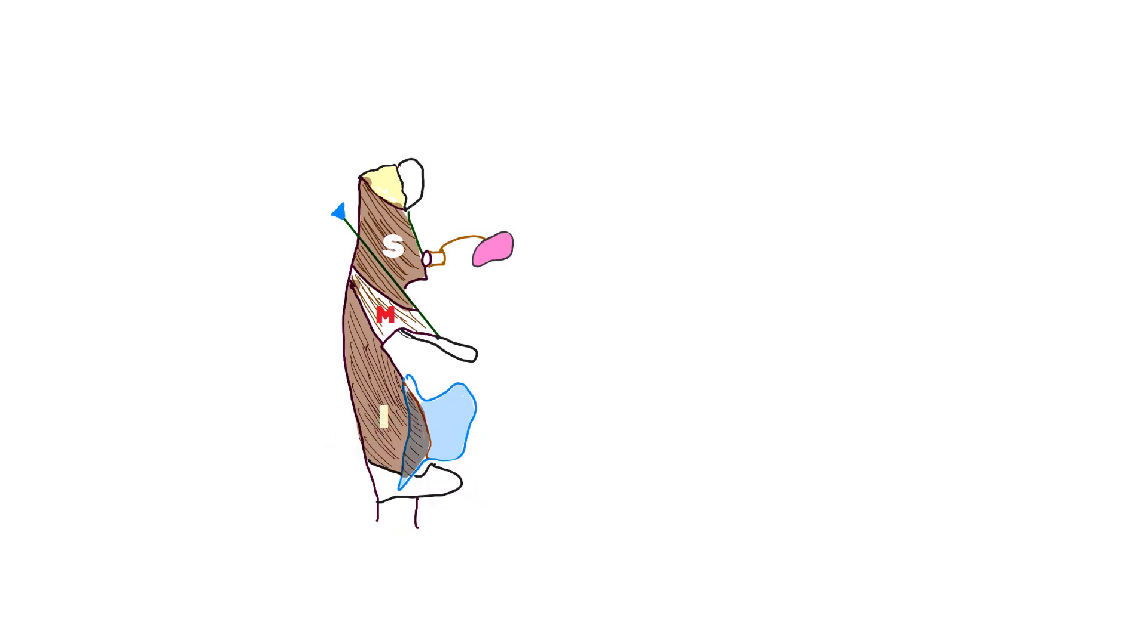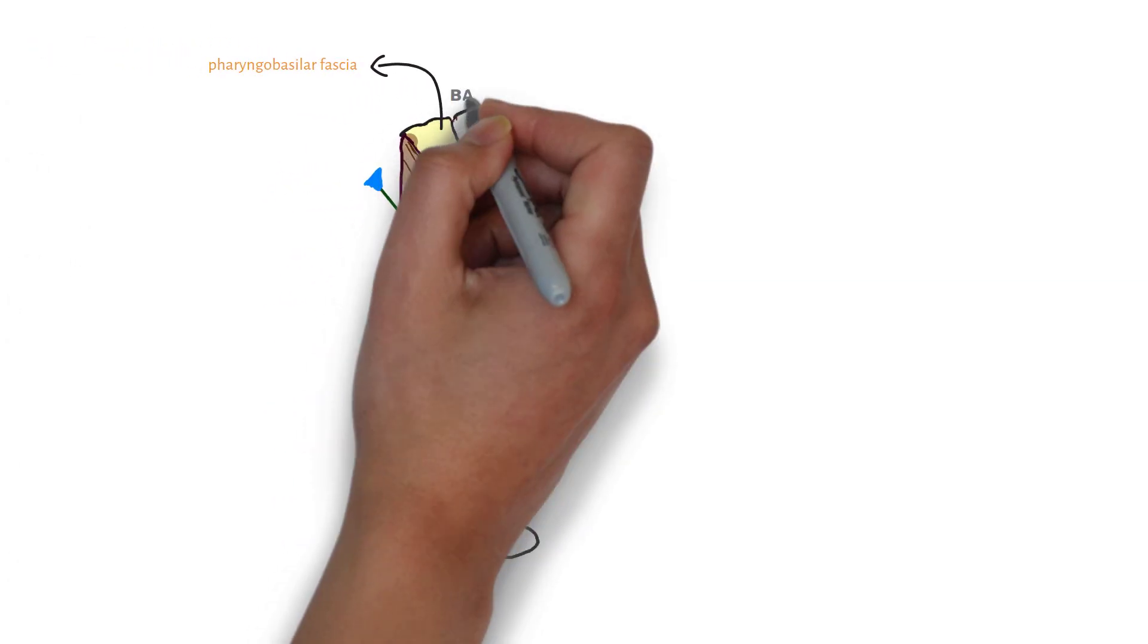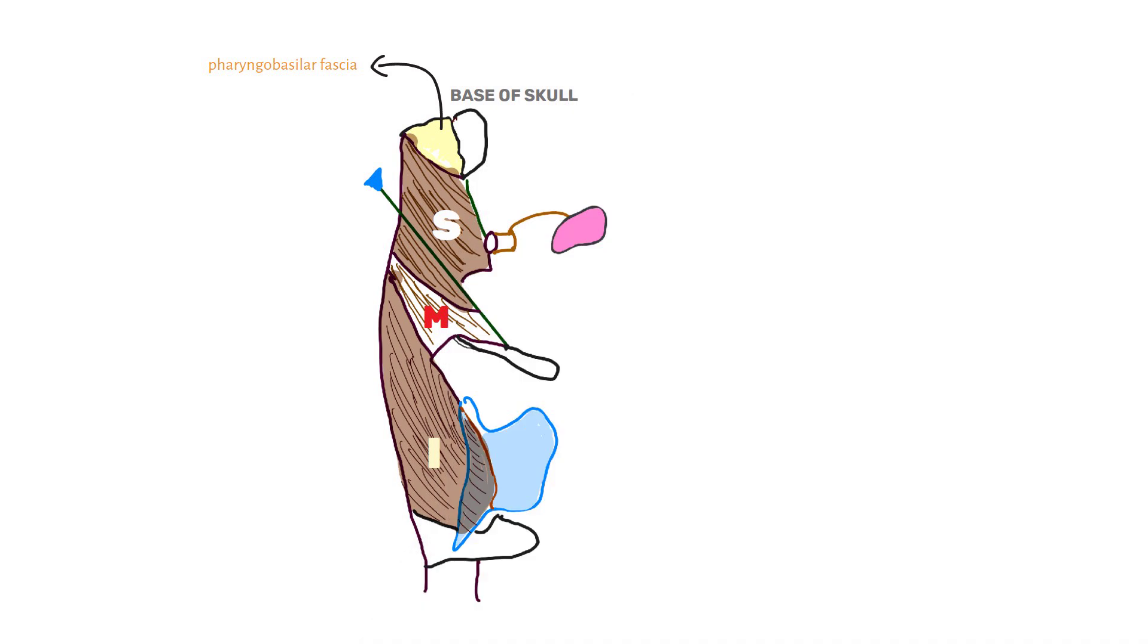On upper edge of superior constrictor, we can observe pharyngobasillar fascia and also base of skull. And the lower edge of inferior constrictor becomes continuous with the circular wall of esophagus.